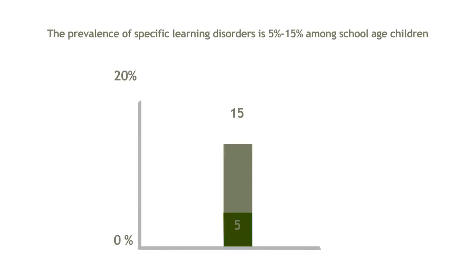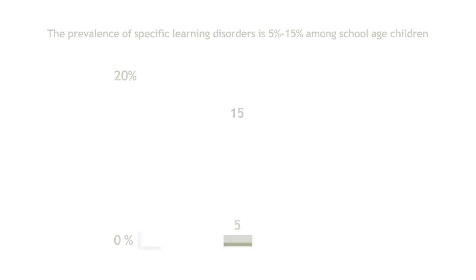Learning disorders appear in aggregates in families, especially when affecting reading, mathematics, and spelling. In addition to heritability as a risk factor, prematurity or very low birth weight, and prenatal exposure to nicotine also increase the likelihood of an individual experiencing clinically significant learning disabilities. The prevalence of specific learning disorders is 5% to 15% among school-aged children, measured across academic domains, different languages, and diverse cultures.